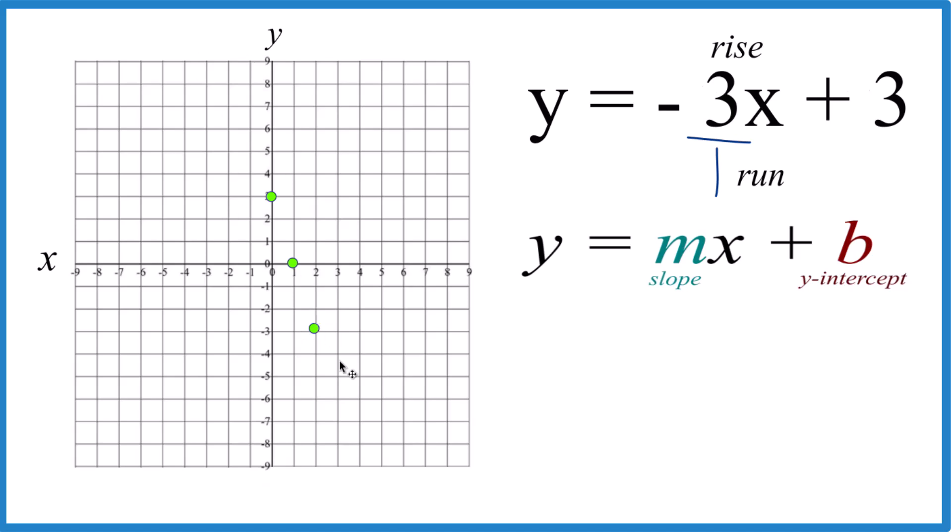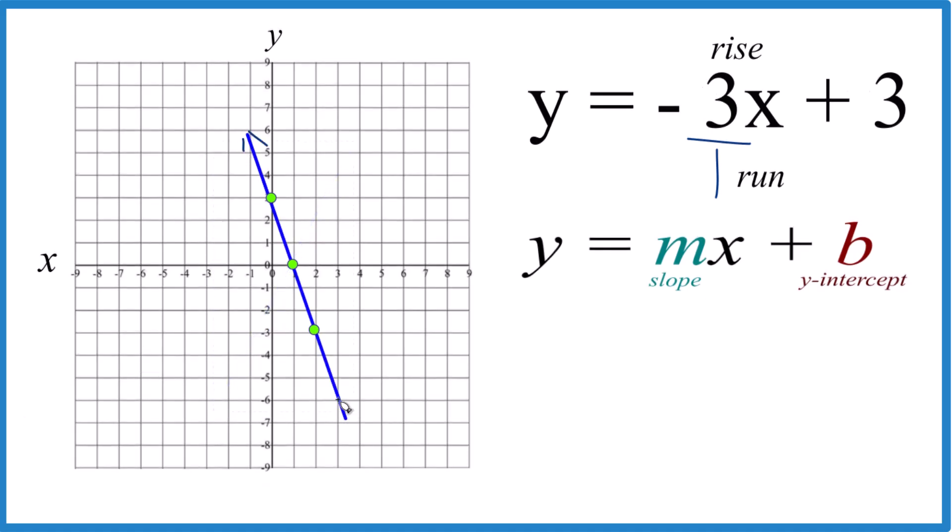They'll just all be on the line here for y equals negative 3x plus 3. Let's put a line through that. Then we can put arrows to show that this goes to infinity, and that is the line for y equals negative 3x plus 3.